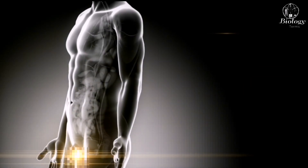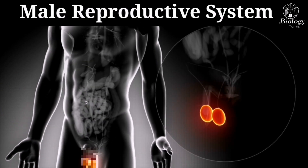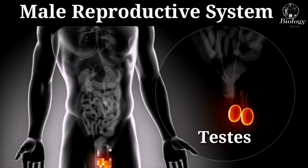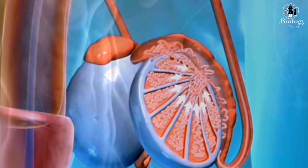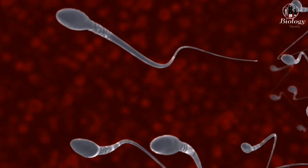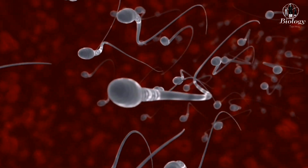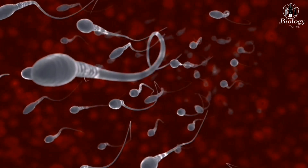Let's start by looking at the male reproductive system. The testes produce sperm cells, which are then stored in the epididymis until ejaculation. During sexual intercourse, the sperm cells are ejaculated from the penis and enter the female reproductive system.